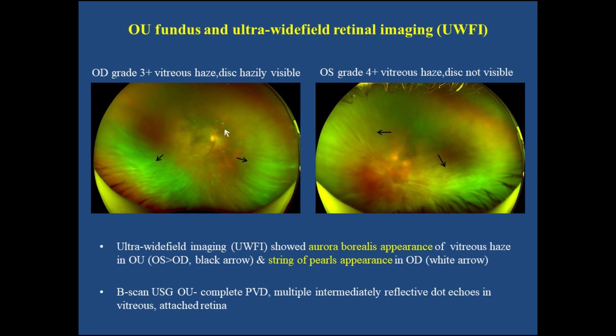Ultra-wide field imaging revealed a peculiar aurora borealis pattern of vitreous haze in OU and a string of pearls pattern in OD. B-scan USG showed complete PVD and attached retina in OU.